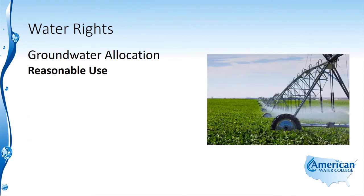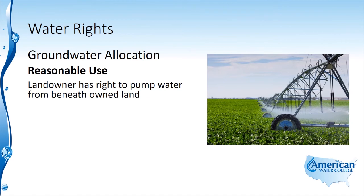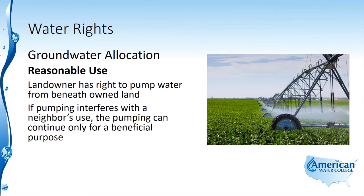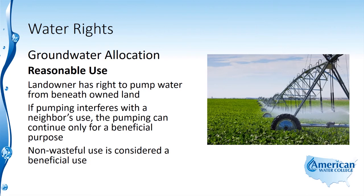Next is the reasonable use doctrine. Under this doctrine, the landowner has the right to pump water from beneath the land that they own. If the pumping interferes with the neighbor's use, the pumping can continue only for a beneficial purpose — the landowner cannot pump for a non-beneficial purpose if it's impacting their neighbor's aquifer. Non-wasteful use is considered a beneficial use, so anything that's not considered waste is considered beneficial.